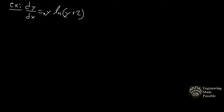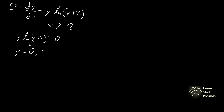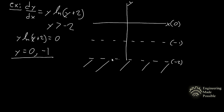For the third example, dy/dx = y·ln(y + 2). Based on the natural log, the domain requires y > -2, since ln(0) is undefined. To find critical points, set y·ln(y + 2) = 0: y = 0 is one solution, and y = -1 because ln(-1 + 2) = ln(1) = 0. So the critical points are y = 0 and y = -1, with the function undefined at y = -2.